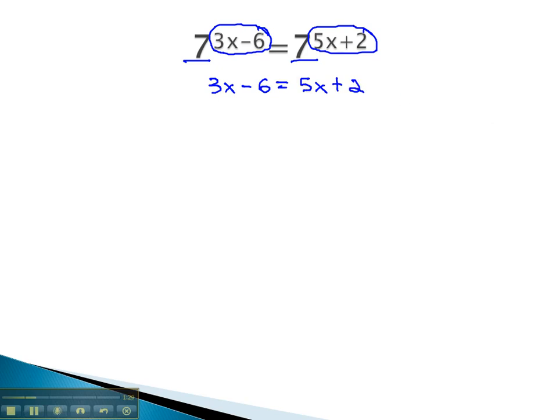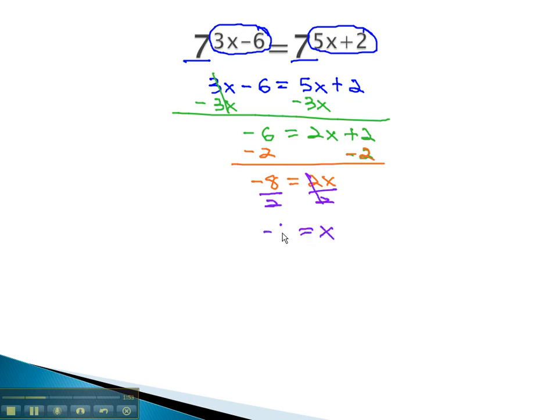This gives us an equation we can quickly solve by moving the variables to the same side, subtracting 3x to get negative 6 equals 2x plus 2, subtracting 2 to get negative 8 equals 2x, and then finally dividing by 2 to find our value for x is equal to negative 4.